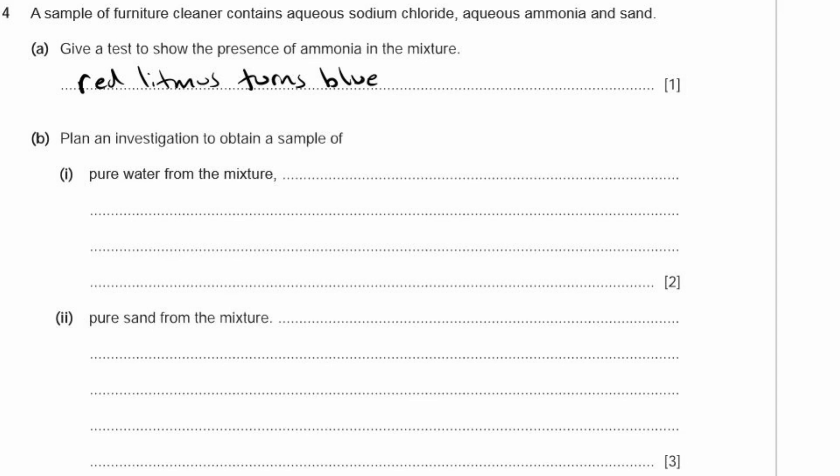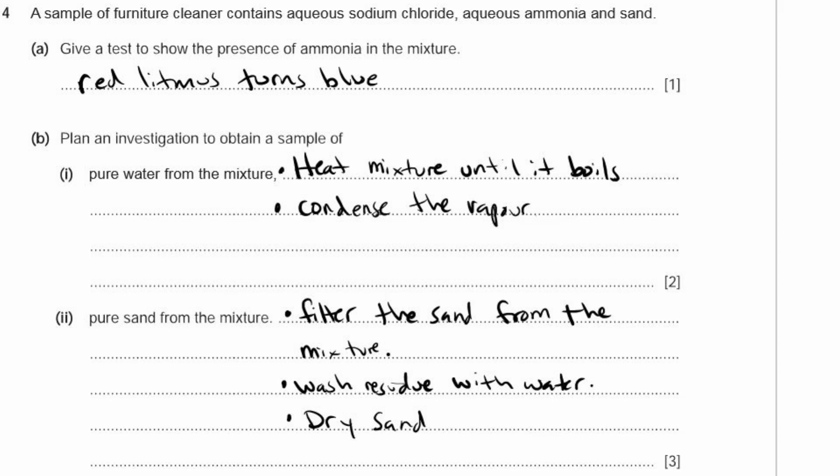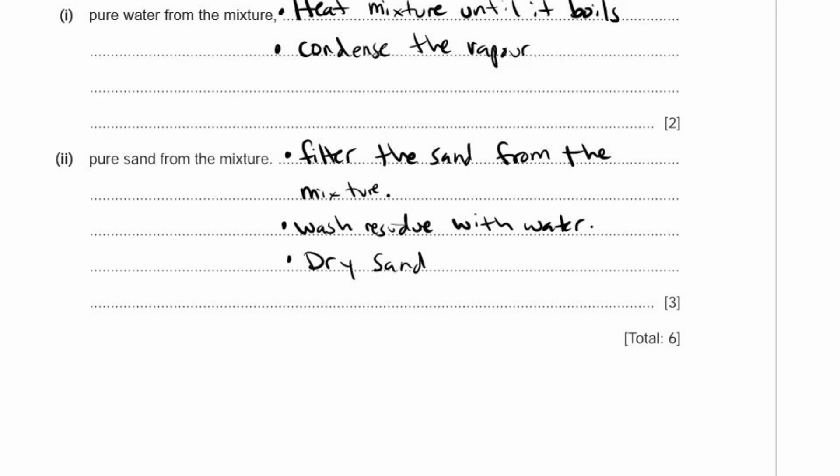B. Plan an investigation to obtain a sample of pure water from the mixture. To obtain pure water, you have to heat the mixture until it boils and then condense the vapor. To obtain pure sand from the mixture, first filter the sand from the mixture. Then you wash the residue with water to make sure there's no salt or ammonia left on it. And then you dry the sand. That's a total of six marks for that entire question, and it's also the end of this exam.